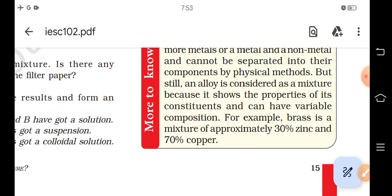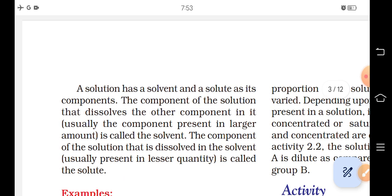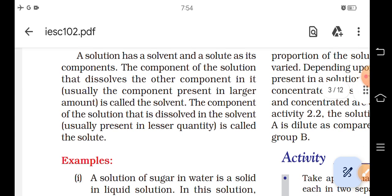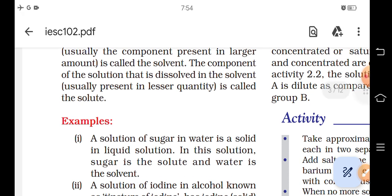For example, brass is a mixture of approximately 30% zinc and 70% copper. A solution has a solvent and a solute as its components. The component that dissolves the other component, usually the component present in larger amount, is called the solvent. The component that is dissolved in the solvent, usually present in lesser quantity, is called the solute.